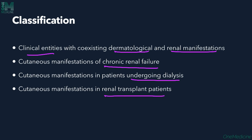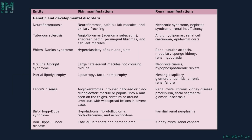We have various conditions including genetic conditions and infectious conditions associated with this. Genetic conditions include firstly neurofibromatosis, wherein the skin shows neurofibromas, cafe-au-lait macules, and axillary freckling. The associated renal manifestation would be the presence of nephrotic syndrome and renal insufficiency.